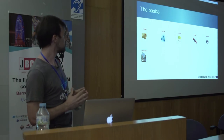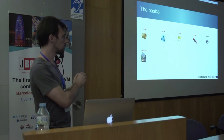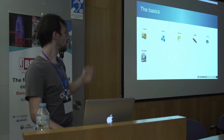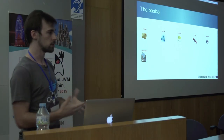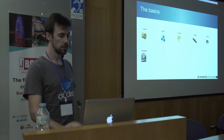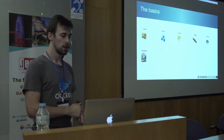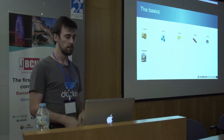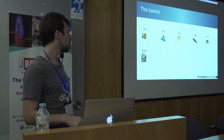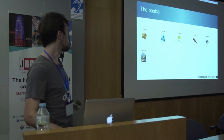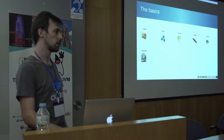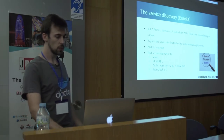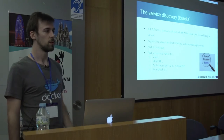I'm going to talk about the core set of them: Eureka, Karion, Archaios, Ribbon, Hystrix, and Simian Army, which I think are the basics to start this kind of architecture in this ecosystem. Eureka is for service discovery. Karion would be like the microservice framework. Archaios is for configuration management. Ribbon is for client load balancing, and Hystrix for fault-tolerant strategy. And Simian Army for testing.